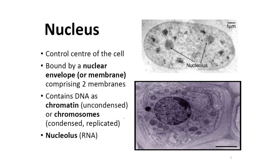Who discovered the nucleus? Robert Brown discovered it. It was discovered in a dead cell. The nucleus is the control center of the cell, sometimes called the brain of the cell.